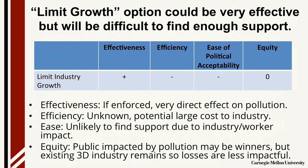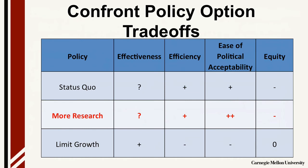For the third option — limiting the growth of the industry — the option is likely to be effective in limiting emissions and thus perhaps more equitable to the public. But it will be very difficult to find sufficient support from industry and those employed directly or indirectly in the field. The next step is to put all the summary independent assessments together and confront the trade-offs among the policy options in a matrix. Looking at this matrix, we can see that of the three options assessed, the one with the overall more positive assessment is the more research option. The key criteria differentiating the analysis is ease of political acceptability, as this option does not adversely impact the industry but does respond to concerns about 3D printing. In addition, there is an existing successful model for policy, which increases its chances for success.